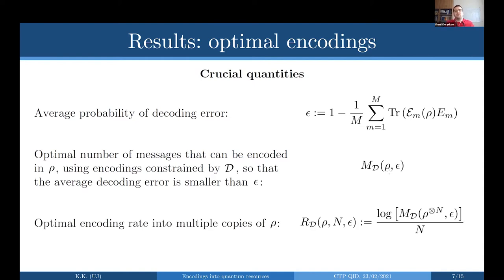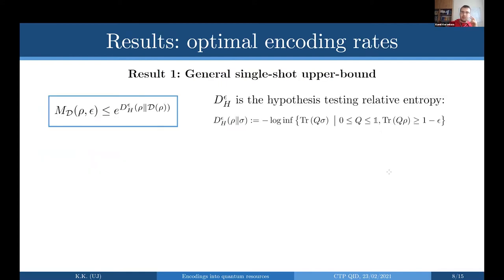Going to the asymptotic limit, instead of a single copy of rho we consider many copies, and we look at the encoding rate — how many messages can we encode per one copy of a given state. Those are the three crucial quantities that the results address.